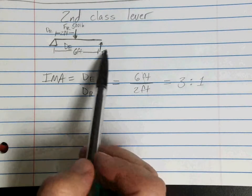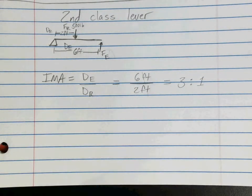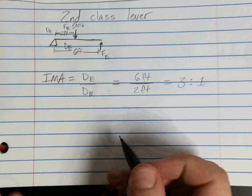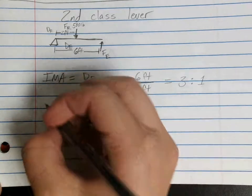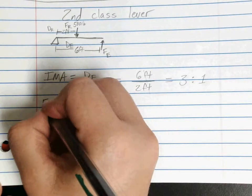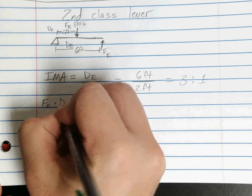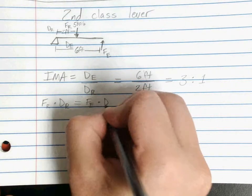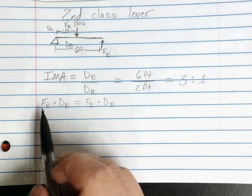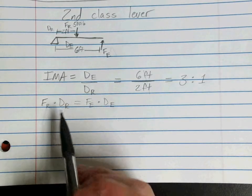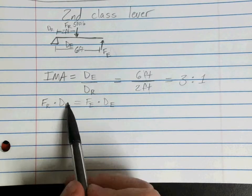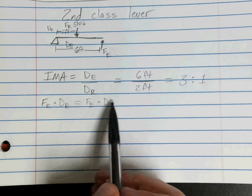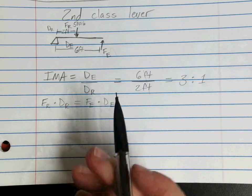So what we look for next, since we were missing our effort force, we're going to use our static equilibrium to find that effort force. We're going to use the same static equilibrium equation we've used before. So that is our FR times DR equals FE times DE. Remember, it does not really matter what order this is in, as long as you have both of your resistances on one side and both of your efforts on the other.